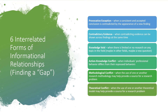How do we find a gap in our knowledge? There are six interrelated forms of informational relationships — how to find a gap. One is the provocative exception: when a consistent and accepted conclusion is contradicted by the appearance of a new finding. We all thought this was going to be the same across all situations, but in this one situation it doesn't appear to work or operates differently. That's a provocative exception — generally speaking, in most settings it's like this, however in this case it's not.